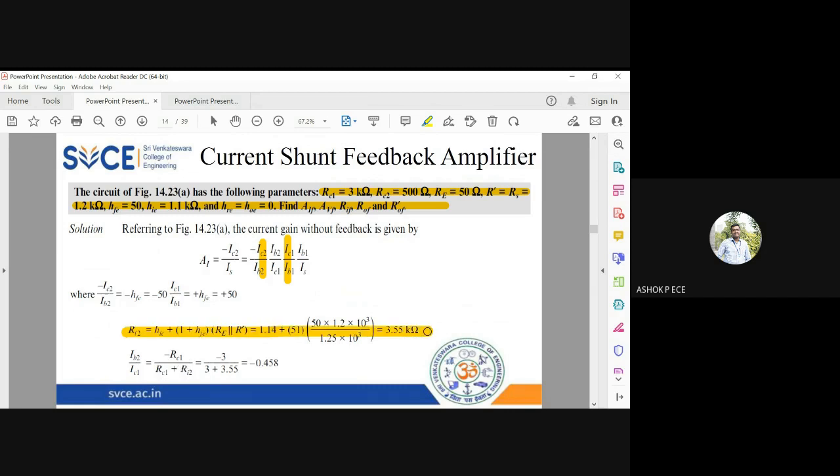First you have to find r2. The formula for r2 is hie plus 1 plus hfb times re parallel to r'. RE is 50 ohms and r' is 1.2k. If you find the parallel combination it will be less than 50, and you can see the value of r2 is 3.55k. Substitute that here, we get ib2 by ic1 equals minus 0.458.